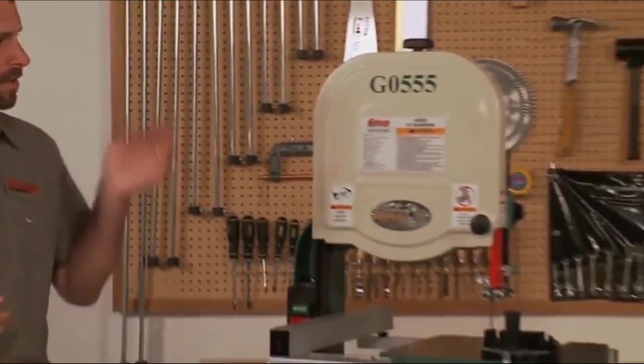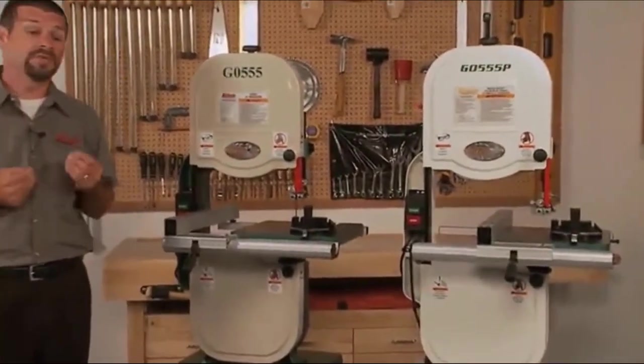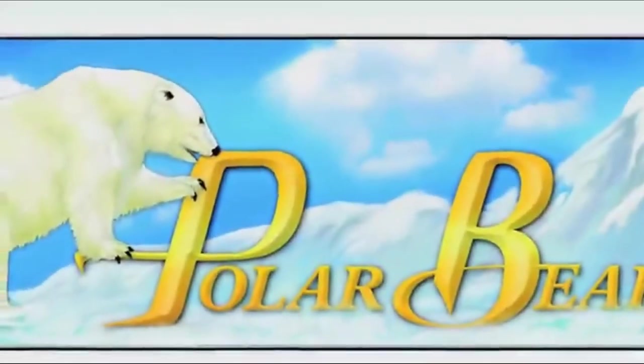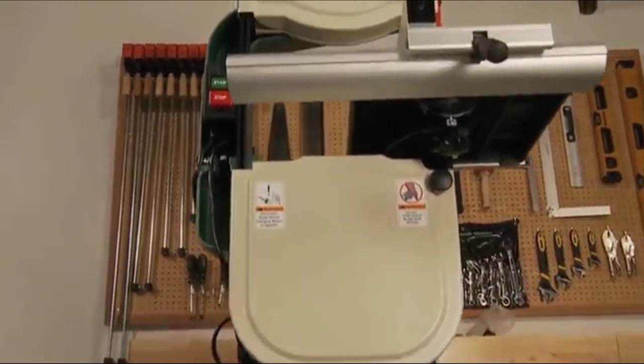Remember when basic information about this saw. The G0555 and the G0555P are the same machine with the only difference being in color. The P in the G0555P stands for our Polar Bear series, which is white in color, while the G0555 is green and tan.